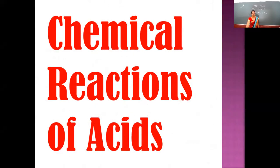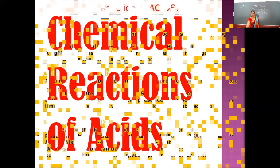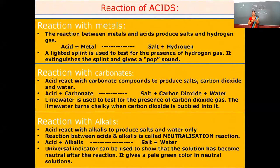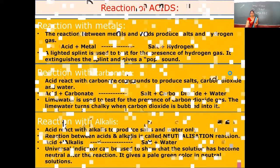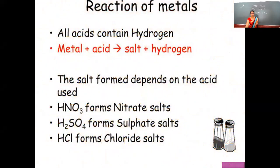Acids react with different things like metals, carbonates, alkalis, and non-metal oxides to form different products. In this session we will discuss two or three chemical properties of acids. Number one: reaction of metal with acid.